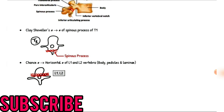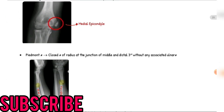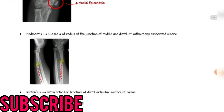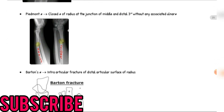Next are the upper limb fractures. Neater leaguer's elbow fracture, avulsion fracture of the medial epicondyle of the humerus. Next is the Piedmont's fracture: closed fracture of the radius at the junction of the middle and distal third without any associated ulnar fracture.